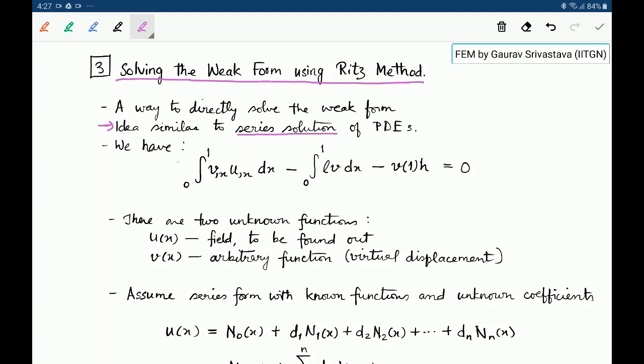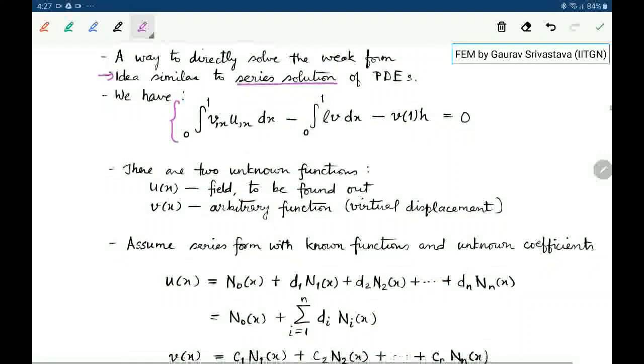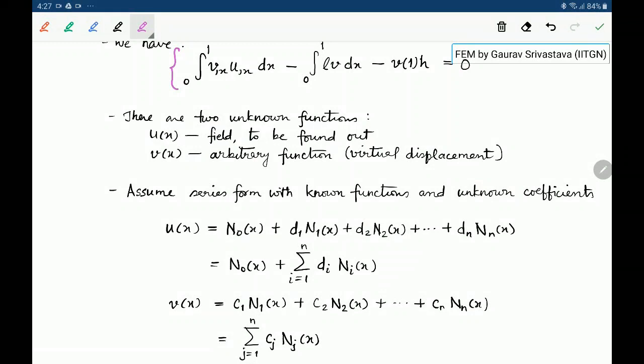So what we have in terms of weak form is this. Now notice that there are two unknown functions. One is the field variable U of X which we want to find and one is this V of X which is an arbitrary function. This is the virtual displacement.